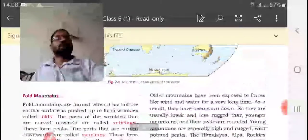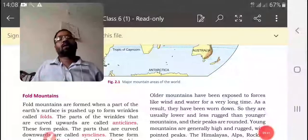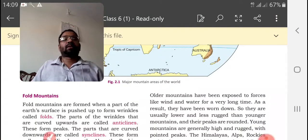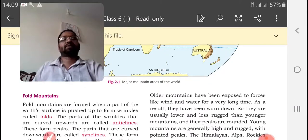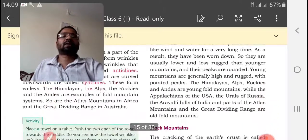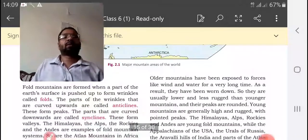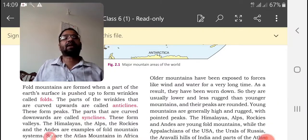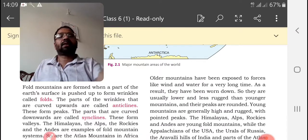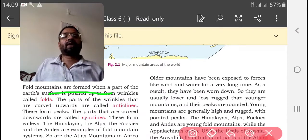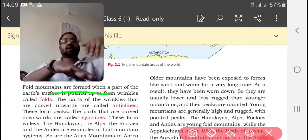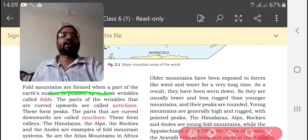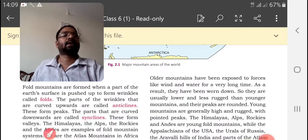First we are going through the fold mountains. Because of the folds, some part of earth is getting elevated and that part is known as fold mountains. Fold mountains are formed when a part of earth surface is pushed up from wrinkles called folds. The parts of wrinkles that are curved upward are called anticlines. The parts that are curved downward are called synclines.